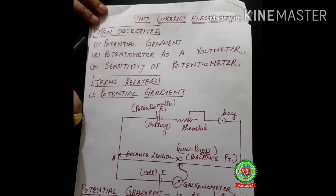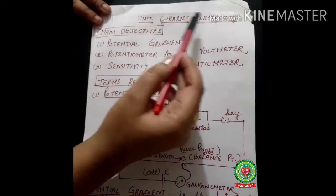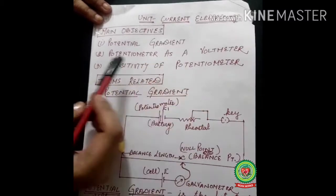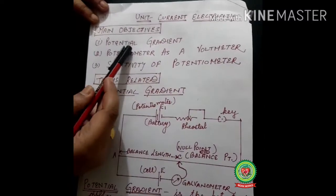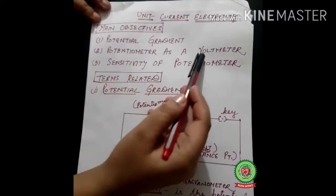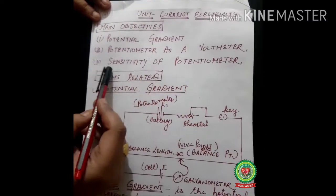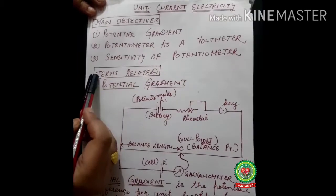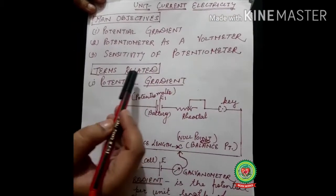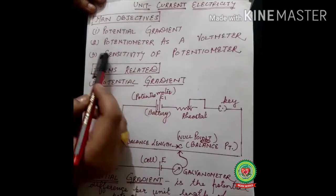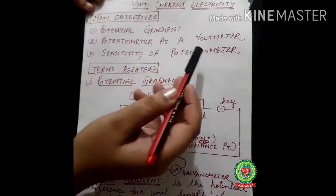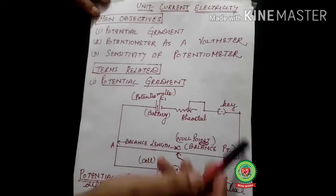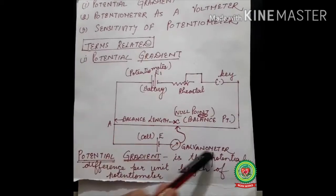Hello students, let's start with the unit Electricity. The main objectives of today's topic will be potential gradient, potentiometer as a voltmeter, and sensitivity of the potentiometer. Before discussing all these things, let us see the circuit here.